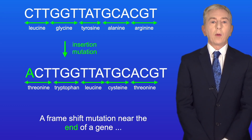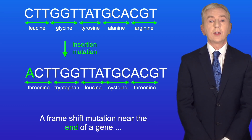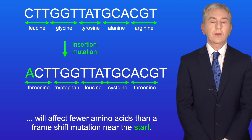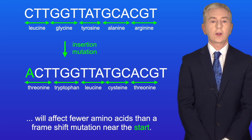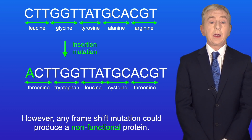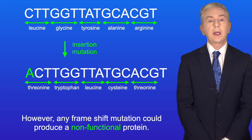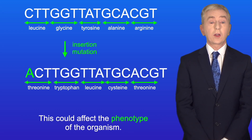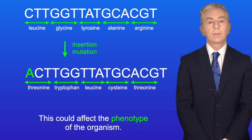A frame shift mutation near the end of a gene will affect fewer amino acids than a frame shift mutation near the start. However, any frame shift mutation could produce a non-functional protein, and this could affect the phenotype of the organism.